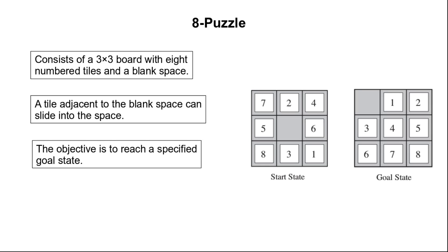The objective is to reach a specified goal state. For example, this may be a goal state. Starting at a given start state, the goal is to reach the goal state by moving the tiles into the blank space by making different moves.